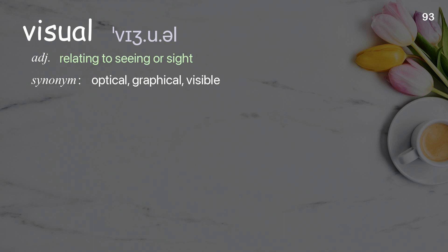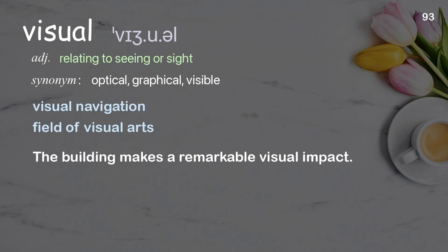Visual: relating to seeing or sight. Examples: visual navigation, field of visual arts. The building makes a remarkable visual impact.